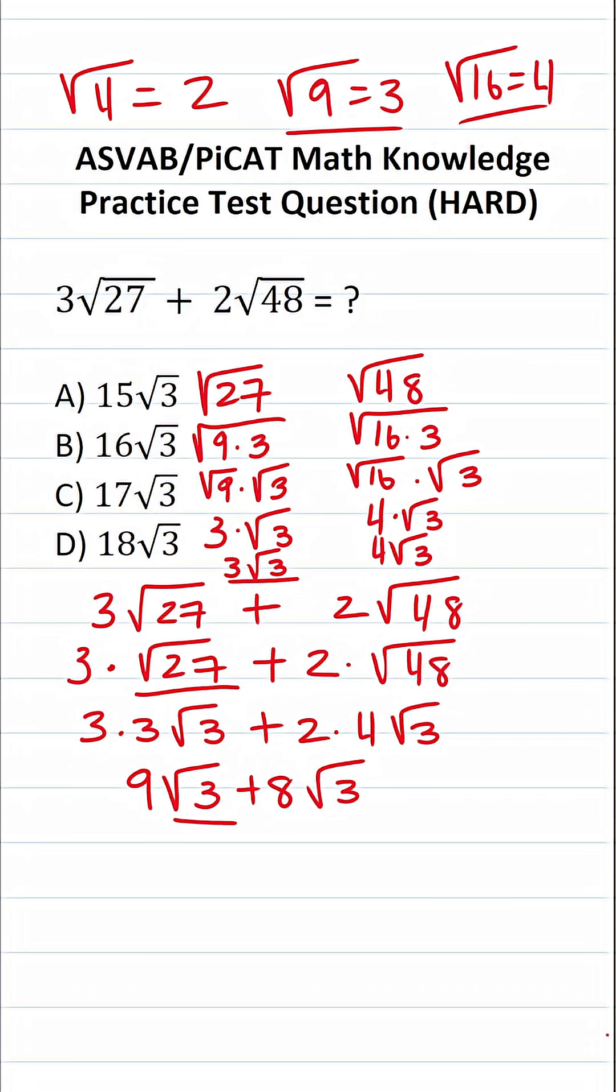Since these radicals are the same, that is, they're both square root 3, we just add these together. 9 plus 8 is going to be 17. So, this is 17 square root 3. The answer to this one is C.